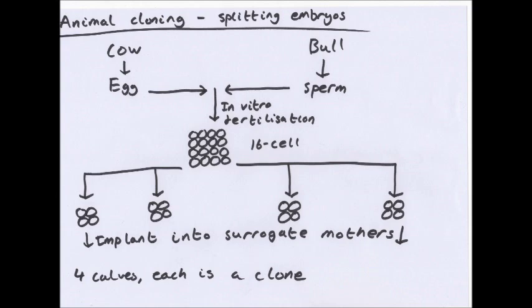The cells divide by doubling: one cell becomes two, becomes four, becomes eight, becomes sixteen. Once you've got sixteen cells, you split that cell into four parts of four cells. You implant them into a surrogate mother so they can grow, and then you've got four calves. Each is a clone of each other.